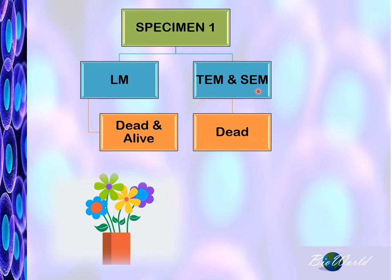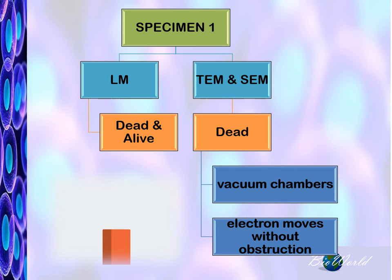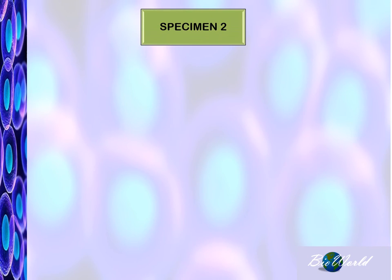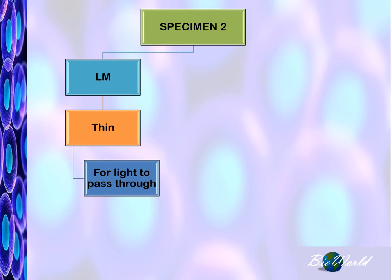This is because the electron microscopes use vacuum chambers to make sure that the electrons move without obstruction. Another factor about the specimen is that in light microscopes, the specimen has to be cut thin. This is so that the light can pass through the specimen.